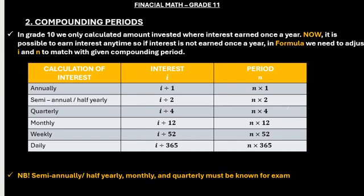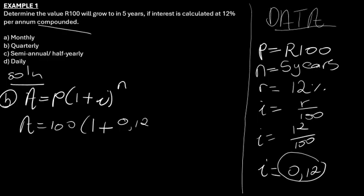So let's do that. I will need to divide i by 4, then I will need to multiply n by 4. In this case n is 5, then I multiply 5 by 4. From here I go straight to my calculator.